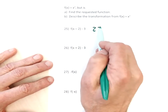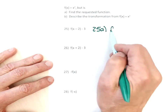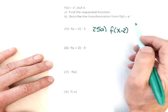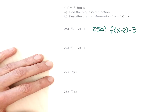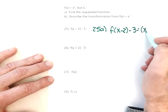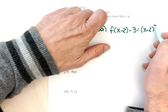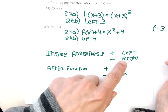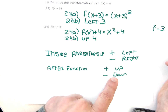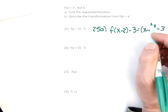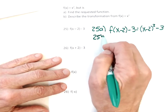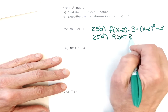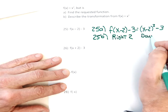Problem 25a wants me to find a function: f of x minus 2, since that's inside a parenthesis, it needs to stay inside a parenthesis. The minus 3, because that's not inside a parenthesis, goes after the function. So the function is (x minus 2) squared minus 3. To describe the transformation: minus inside the parenthesis goes right, minus after the function goes down — so it moves right 2 and down 3.